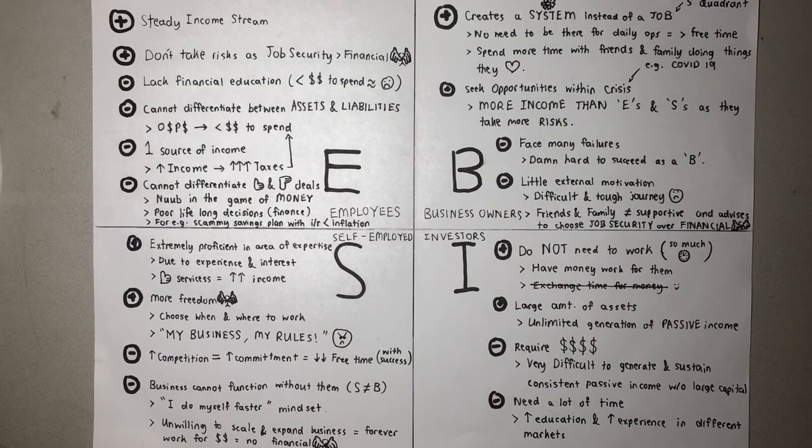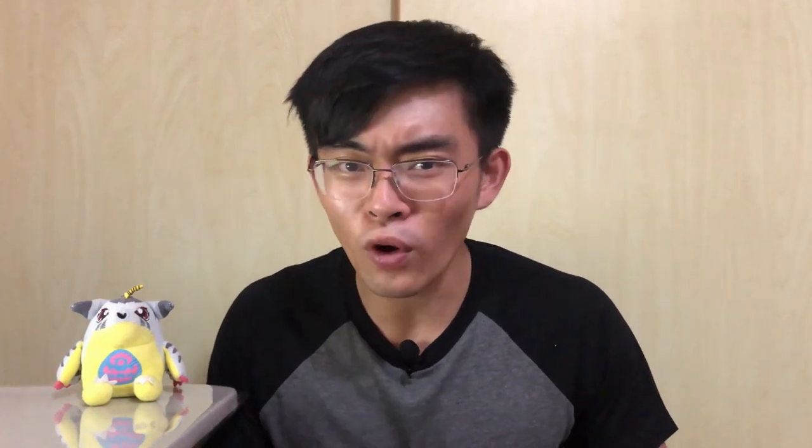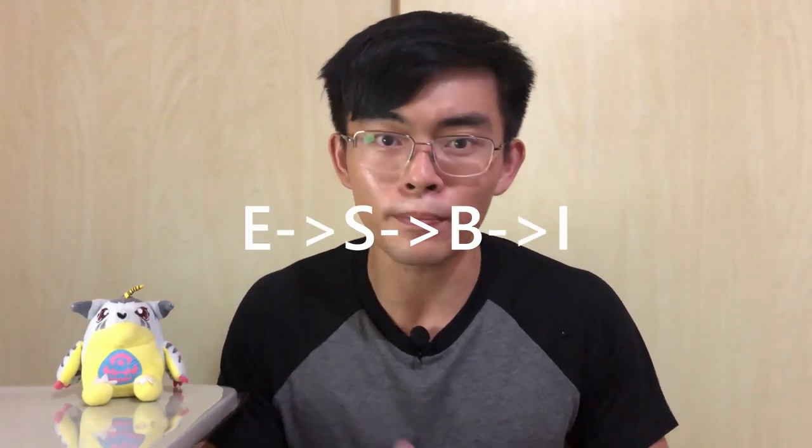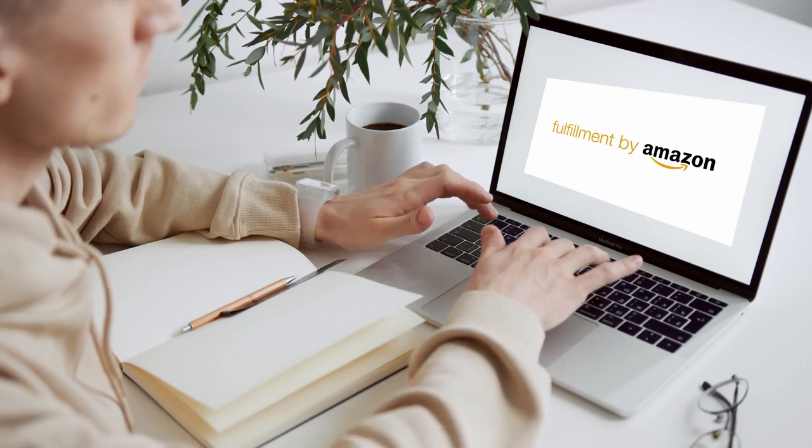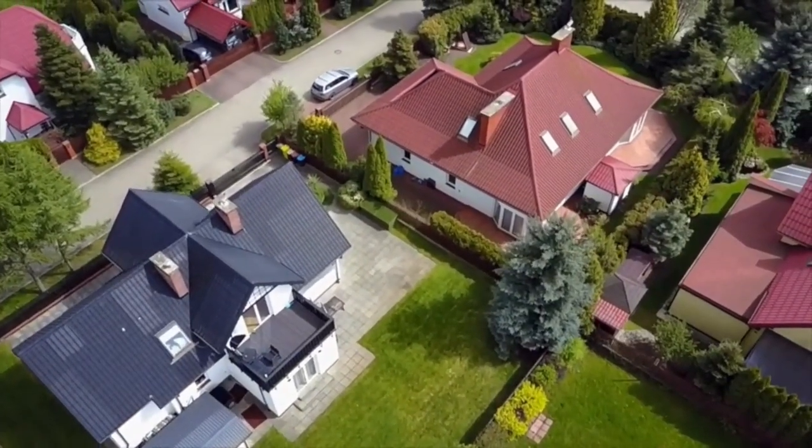Since we've grasped the basic concepts of each quadrant, let me know in the comments where you think you lie and where you want to be in the next five years. Kiyosaki proposes that we start off as an E or S before working our way up to become a B followed by an I. Most people who are financially secure actually lie on both sides of the quadrant — for example, you can work as an engineer in the day but operate your own e-commerce business at night.